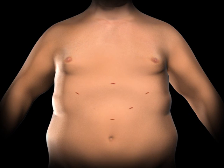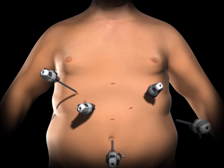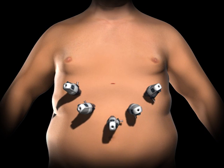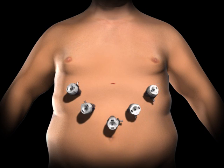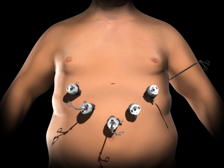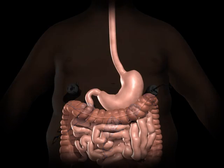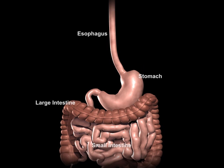To gain access to the abdominal cavity, small incisions are created on the abdomen. Trocars, which serve as passageways for the surgical instruments, are placed into the incisions. The surgeon examines the abdominal cavity using a laparoscope or video camera.